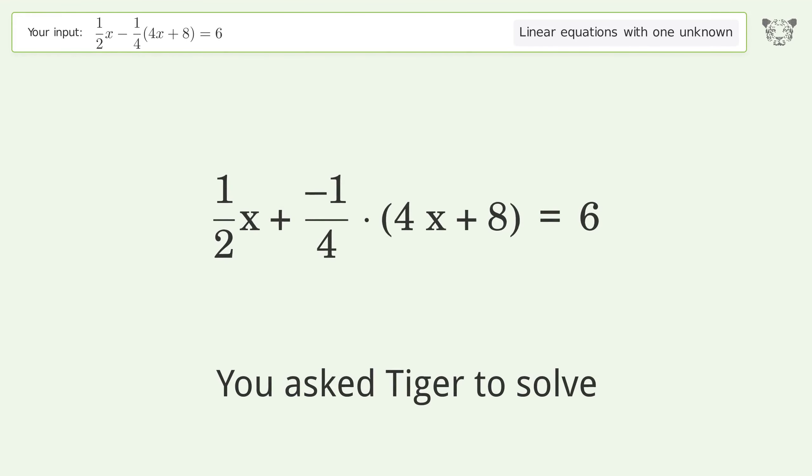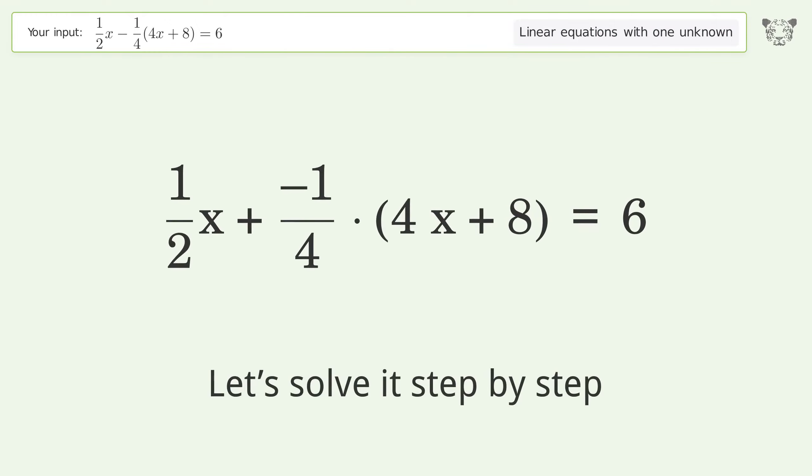You asked Tiger to solve this. It deals with linear equations with one unknown. The final result is x equals negative 16. Let's solve it step by step. Simplify the expression. Multiply the fractions.